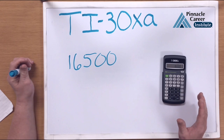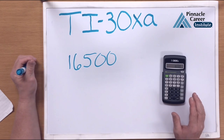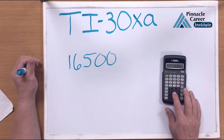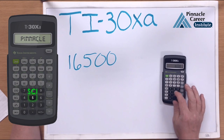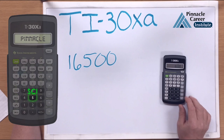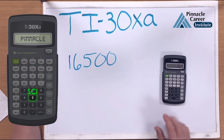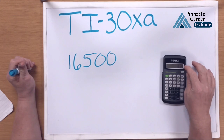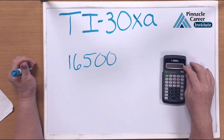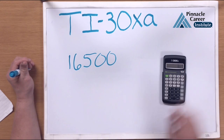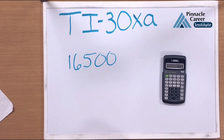You're basically in the float section right now. To change it to scientific with this calculator, you'll hit the second button and the 5, because above the 5 you'll see SCI, which stands for scientific notation. Hit your second button and then 5, and it puts it into 1.65 with a 04 here. That 04 means times 10 to the 4th power, so it's 1.65 times 10 to the 4th power. That is scientific notation.